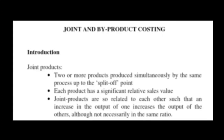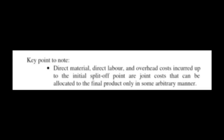The key points to note are that direct material, direct labor, and overhead costs incurred up to the split-off point are joint costs, and these can be allocated to the final products only in some arbitrary manner, which is decided prior to starting production — determining how much should be allocated to which product.